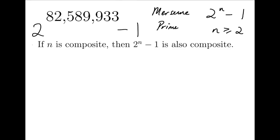Here is a claim. If n is composite, then 2 to the n minus 1 must also be a composite number. Indeed, under this condition, I can write n as a product of two numbers, say a and b, where integers a and b are greater than 1.